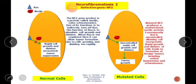Coming to the pathogenesis, the focus lies on chromosome 22, where the NF2 gene codes for the product Merlin protein. This is a cytoskeletal protein that appears to regulate membrane receptor signaling. Its tumor suppressor function may be related to the role of contact inhibition of cell growth.